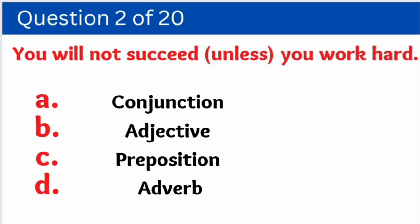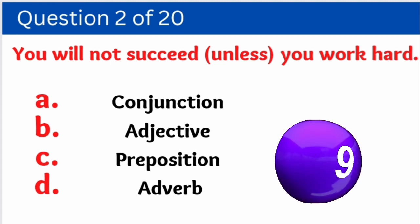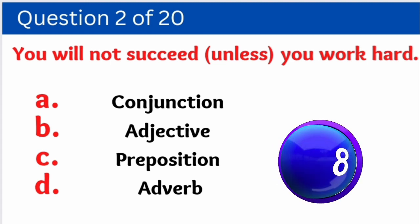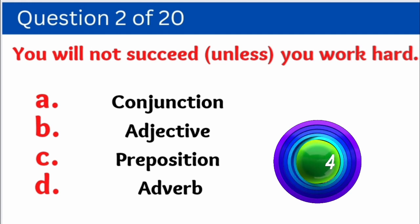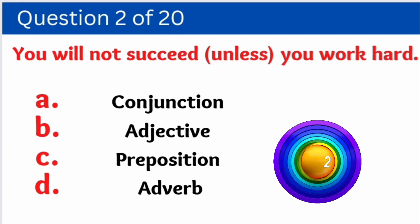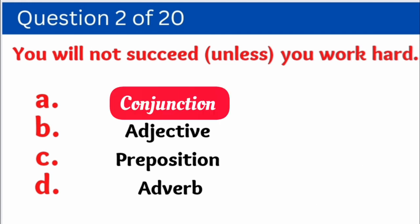Question number two: 'You will not succeed unless you work hard.' In this sentence, we have to identify the word 'unless' — it is used as: A. Conjunction, B. Adjective, C. Preposition, D. Adverb. And the correct answer is Conjunction.